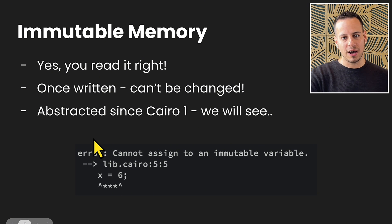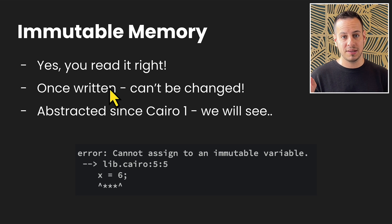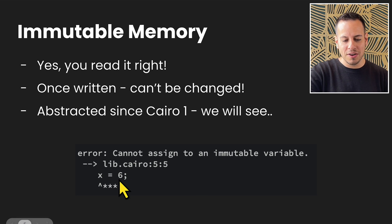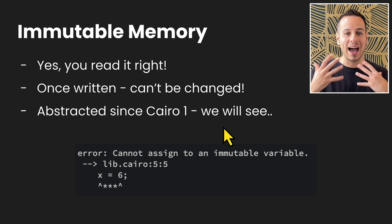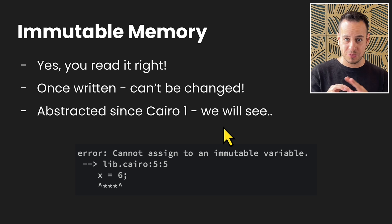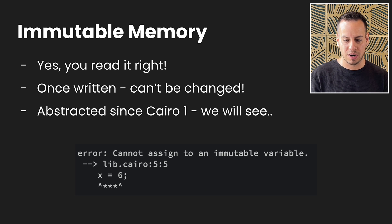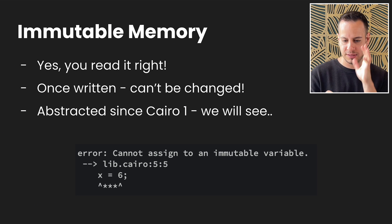Cairo memory is immutable — you cannot change the value of variables you define. Once you write a variable, say X equals six as shown in this example, you cannot change the value of X. As you can see, we get an error: 'cannot assign to an immutable variable.' But since Cairo 1, they abstracted the whole immutability in memory for us, and we can create mutable variables.